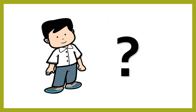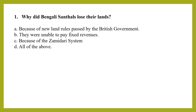Now let's see what we have learned from this content. The first MCQ question is: Why did the Bengali Santhals lose their lands? Options are: because of new land rules passed by the British government, because they were unable to pay fixed revenues due to the zamindari system, or all of the above. The correct answer is all of the above.